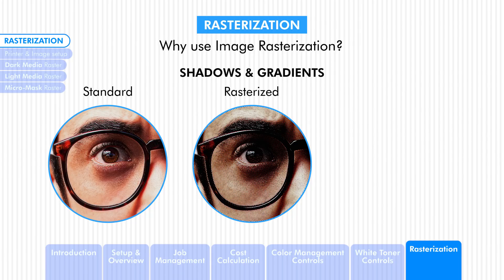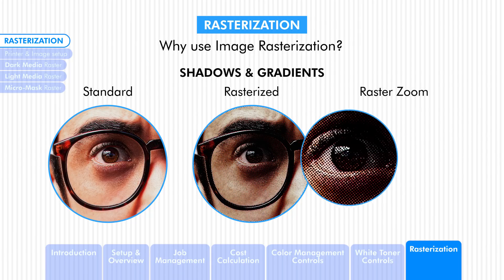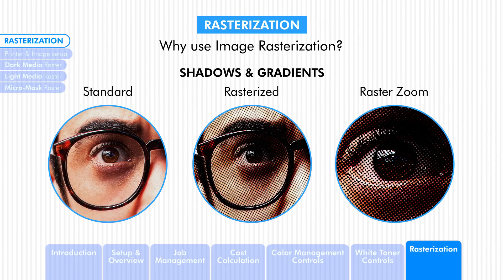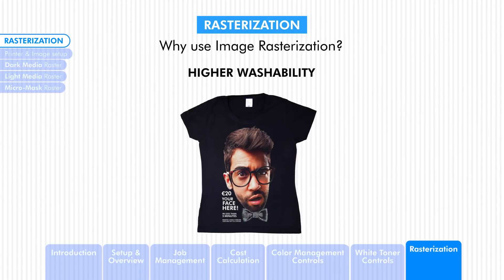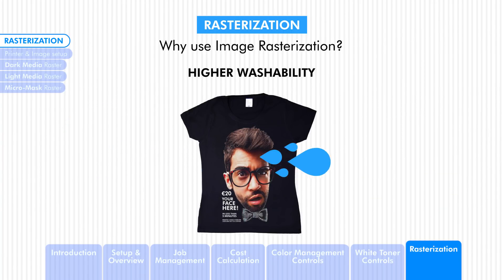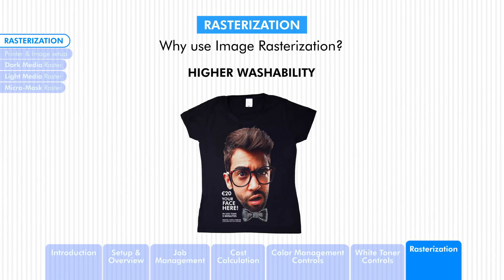To our eyes it looks like a gradient, but on closer inspection we are looking at small dots. Those small dots are the main reason why rasterized images are softer and have higher washability. Because rasterized images are made up of mostly dots, water can easily pass through the image when the garment is being washed.